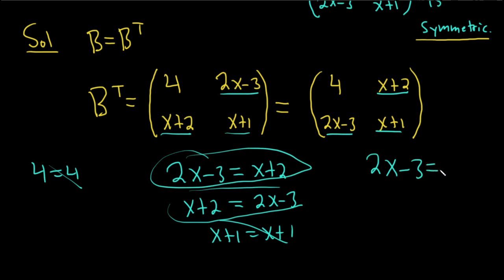So I'll write it again over here. 2x-3 equals x+2. And we're trying to solve for x. So maybe subtract x. So 2x minus x is x. So x-3 equals 2. And then just add 3. So we have x equals 5. So that's the value of x.